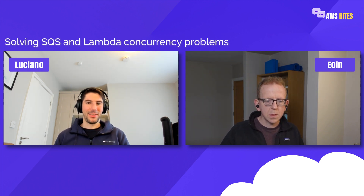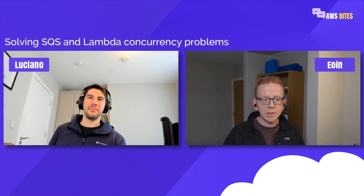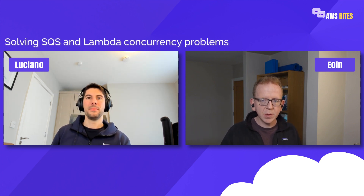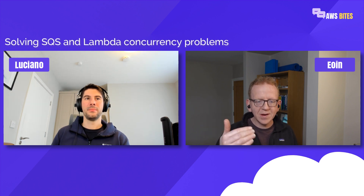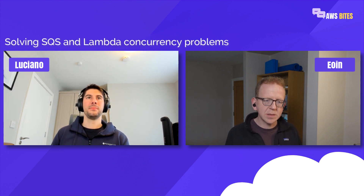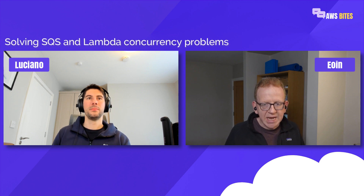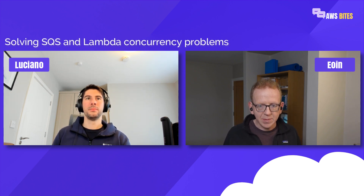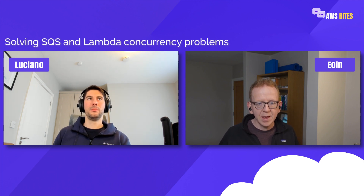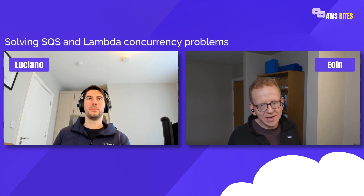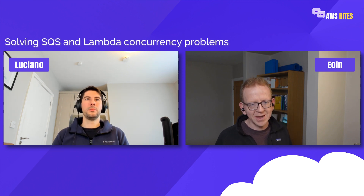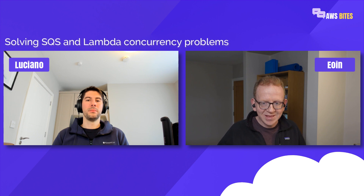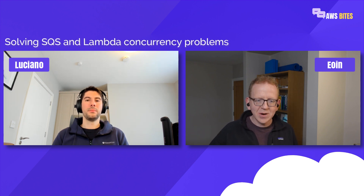With SQS, you're always using a poll-based model. You would need something to poll the queue, retrieve events, process them, and then delete them. Traditionally you'd use EC2, a container, or some other piece of long-lived compute. With AWS Lambda, it's a lot simpler because you don't have to run a poller yourself. The polling service is actually provided as part of Lambda's event source mapping feature. You may have used SQS and Lambda together without knowing that such a feature existed, because frameworks like the Serverless Framework or SAM create this for you transparently under the hood when you create that trigger.